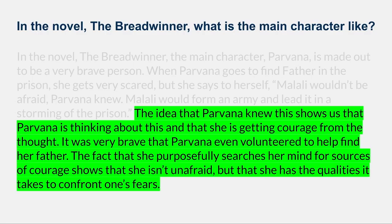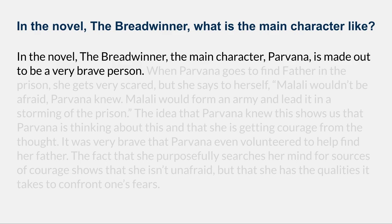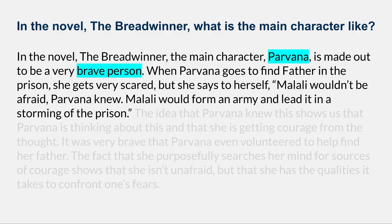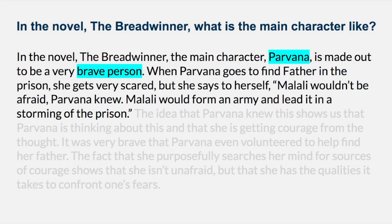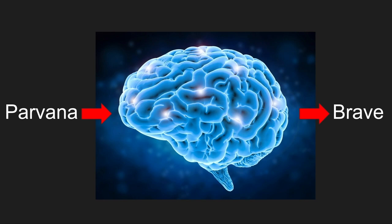You can see the connection made to all the steps in the thinking. To see what inspired our Parvana explanation, we need to go back to the original point, which will tell us what two things we need to connect. We need to connect Parvana to being a brave person — so we start with Parvana and our end point is that Parvana is brave. We rely on key words and ideas from our evidence: Parvana goes to find her father while afraid, she reminds herself of the story of Malali who wouldn't be afraid, and she tells herself Malali would form an army and lead it into the storming of the prison as a way to inspire herself.